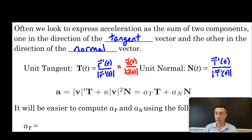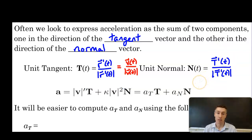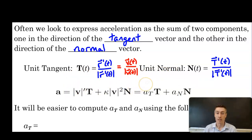The unit normal is the derivative of the unit tangent T prime of t over the magnitude of T prime of t. There will be courses that go deeper into the unit normal and the unit binormal. We're just going to use the unit tangent and unit normal as vectors to help define acceleration as a sum of two components.